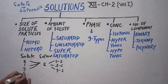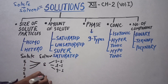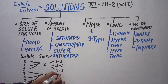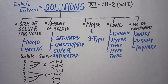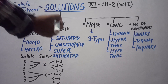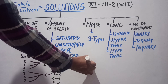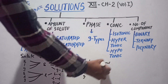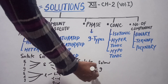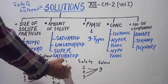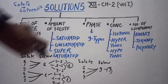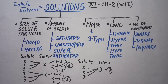And when the solvent is gas, we have three more: solid in gas, liquid in gas, and gas in gas. So in total we have nine types of solutions based on phase. You need to learn their examples too, as MCQ questions may come from this.